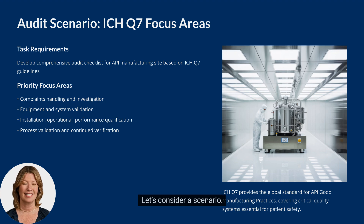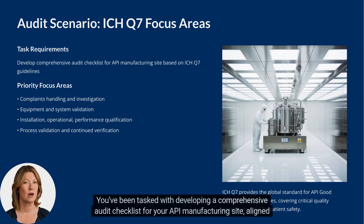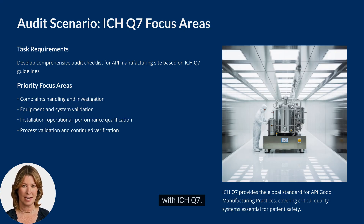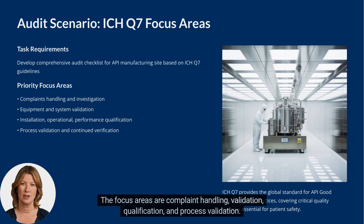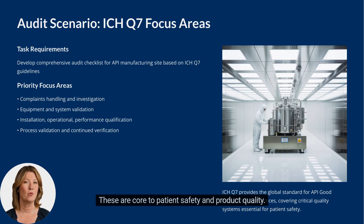Let's consider a scenario. You've been tasked with developing a comprehensive audit checklist for your API manufacturing site, aligned with ICH Q7. The focus areas are complaint handling, validation, qualification, and process validation — these are core to patient safety and product quality.